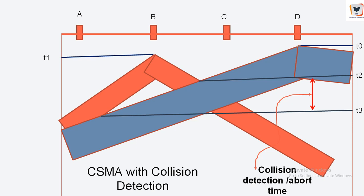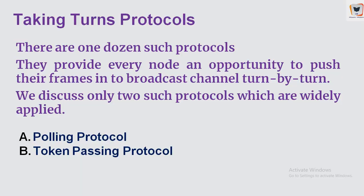So CSMA will sense another node transmitting, while CSMA/CD will precisely detect whether or not a collision has occurred.